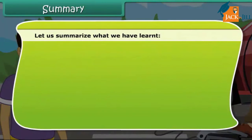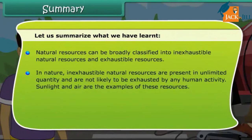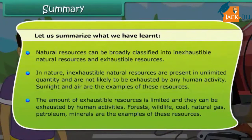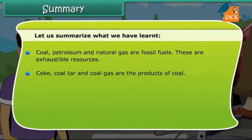Let's summarize what we have learned. Natural resources can be broadly classified into inexhaustible and exhaustible resources. Inexhaustible natural resources are present in unlimited quantity and are not likely to be exhausted by any human activity — sunlight and air are examples. The amount of exhaustible resources is limited and can be exhausted by human activities. Forests, wildlife, coal, natural gas, petroleum, and minerals are examples. Coal, petroleum and natural gas are known as fossil fuels. Coke, coal tar, and coal gas are all products of coal.